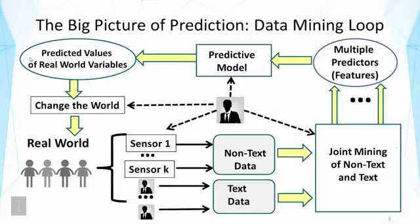This is why I call it the data mining loop — by adjusting sensors to collect new and more useful data, we obtain more data for prediction, which generally improves prediction accuracy. Humans recognize what additional data needs to be collected, and machines help identify what data should be collected next. There is a sub-area in machine learning called active learning that addresses how to identify data points most helpful for machine learning programs.